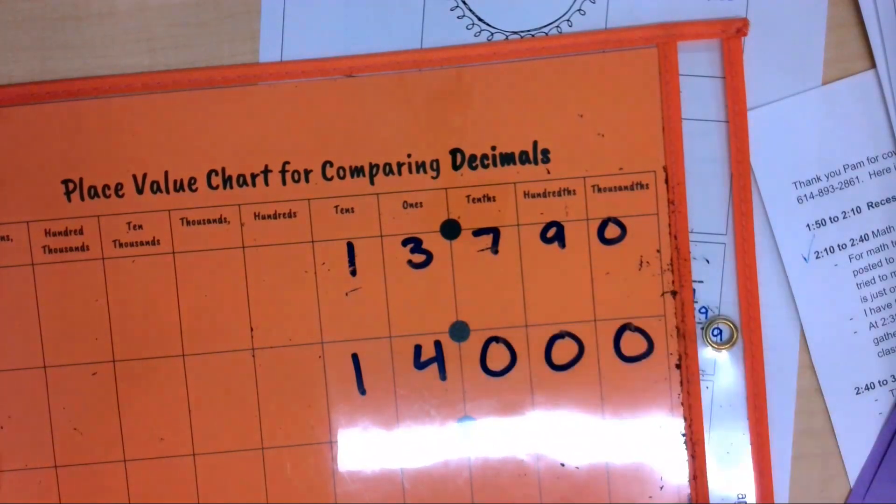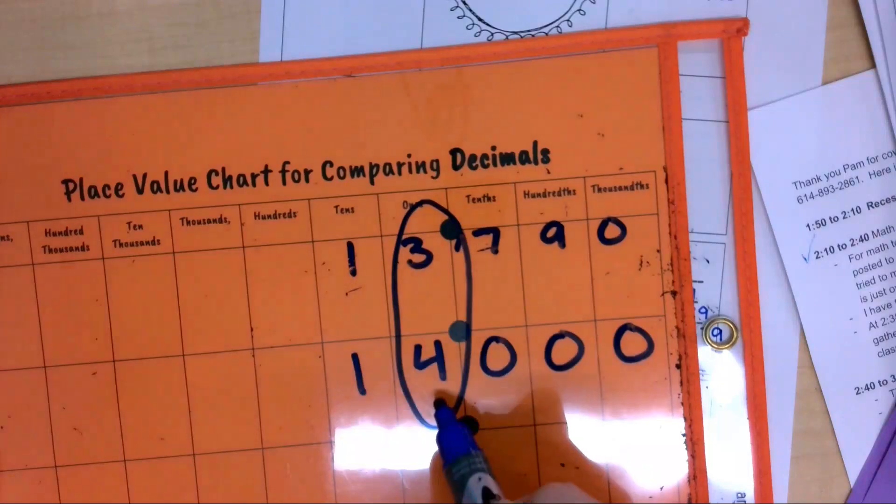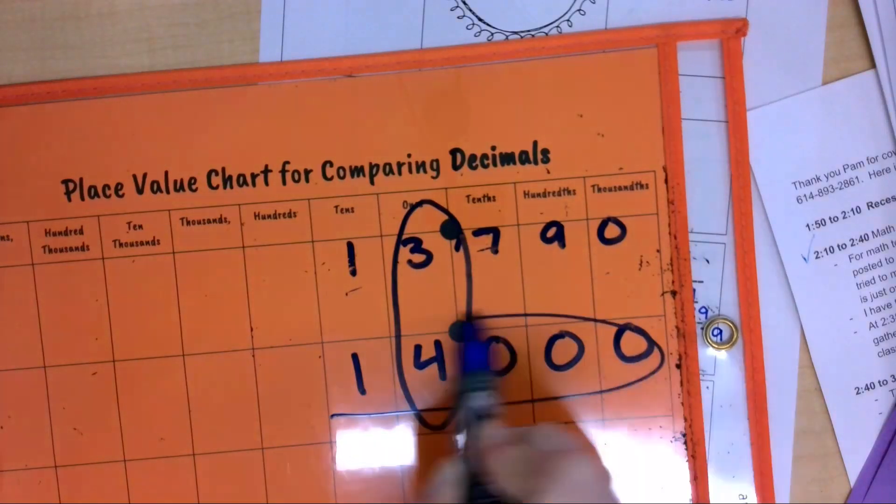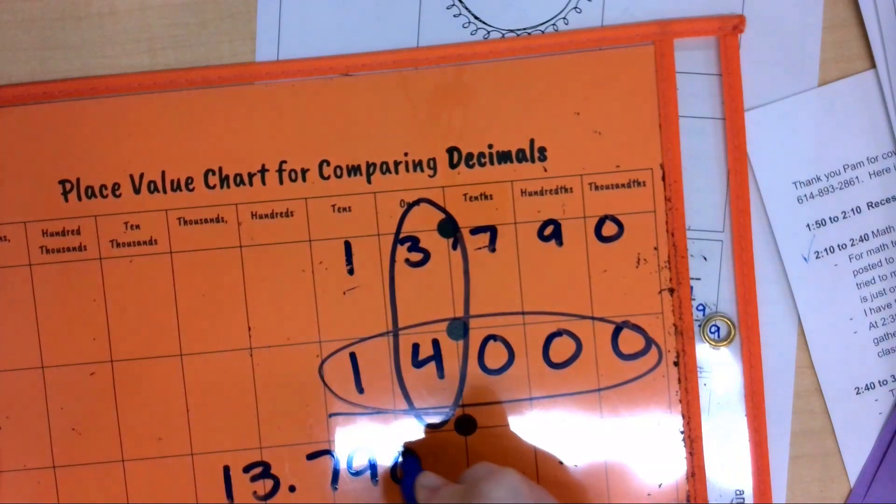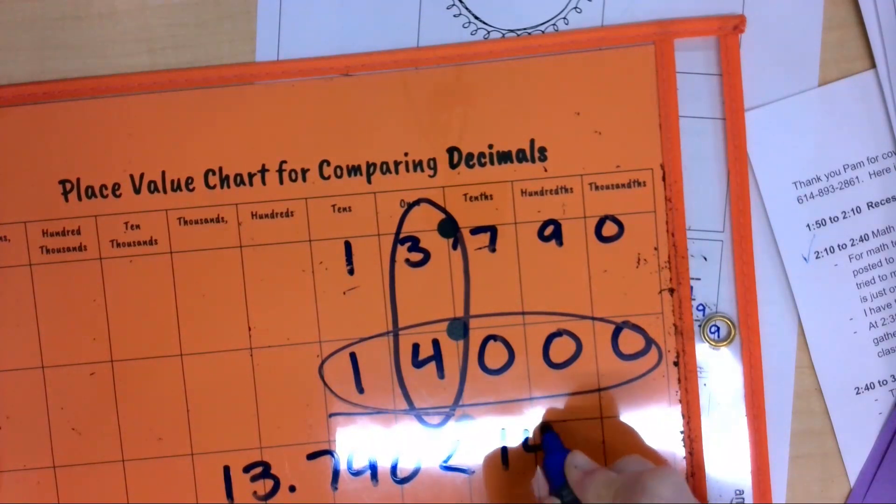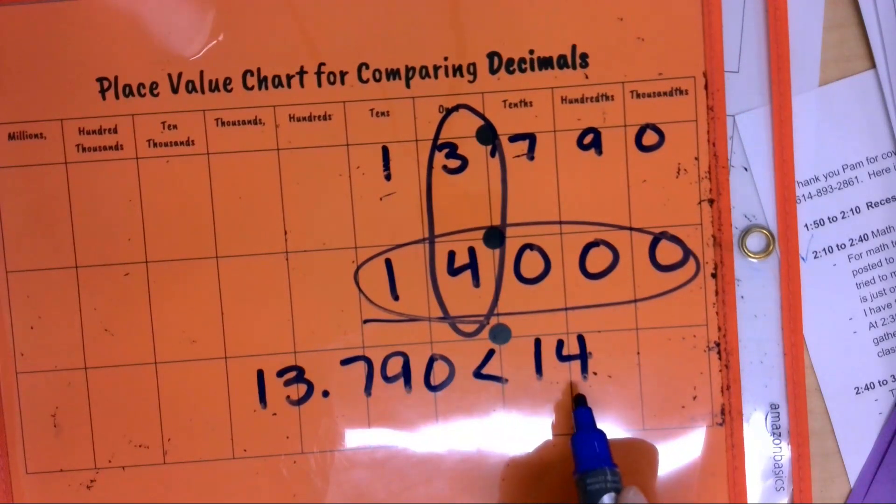But I can see right here that this one has a three and this one has a four, which tells me that the 14 is larger. So then I'd want to make sure that the alligator is eating the larger amount, so I want that mouth open to the bigger number.